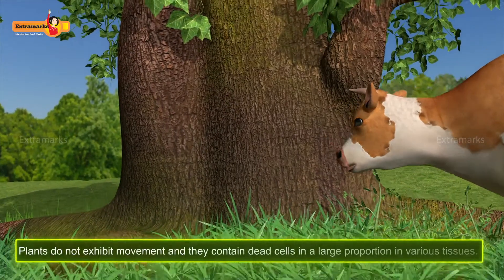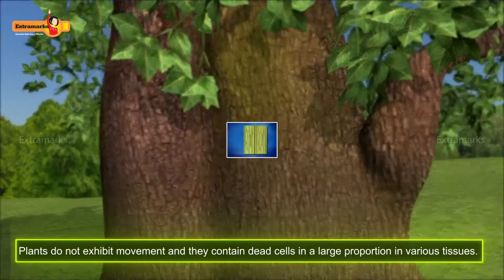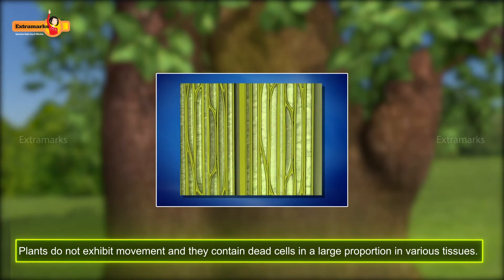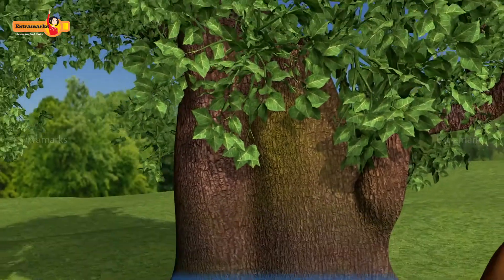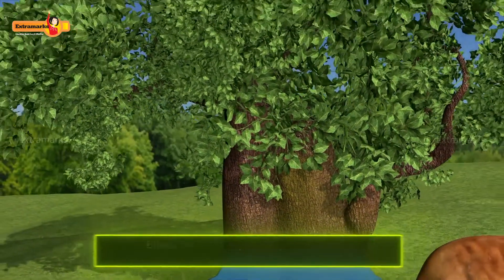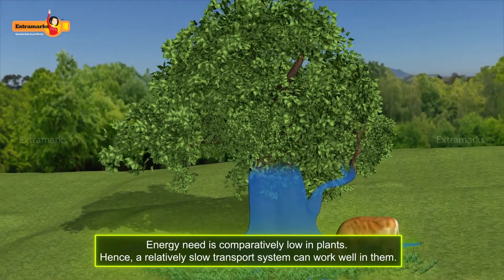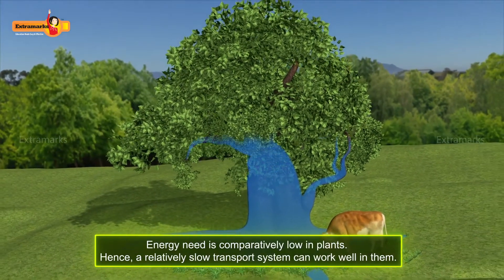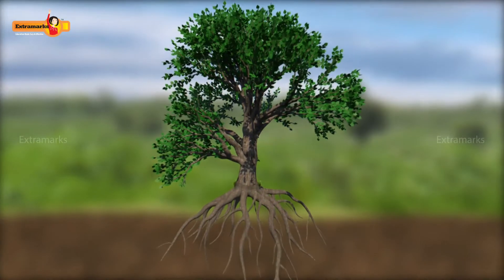The requirement of energy is different for different organisms. Plants do not exhibit movement and they contain dead cells in a large proportion in various tissues. Thus, energy need is comparatively low in plants as compared to animals. Hence, a relatively slow transport system can work well in them.